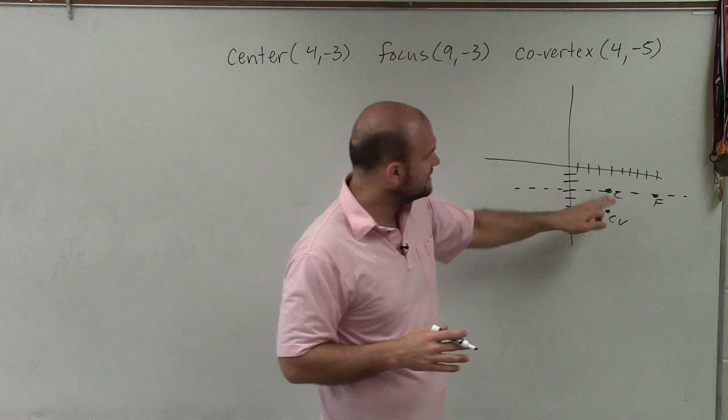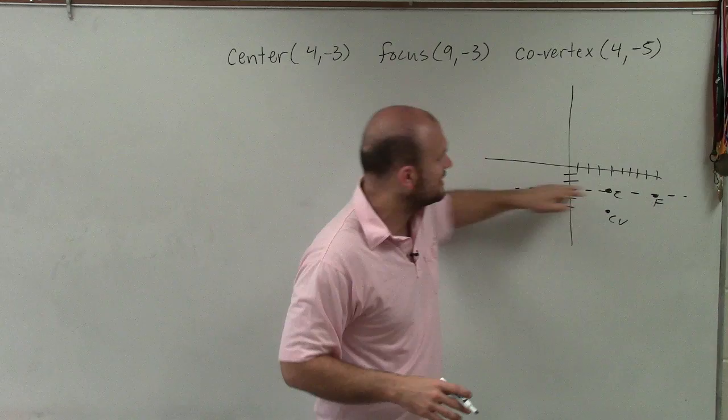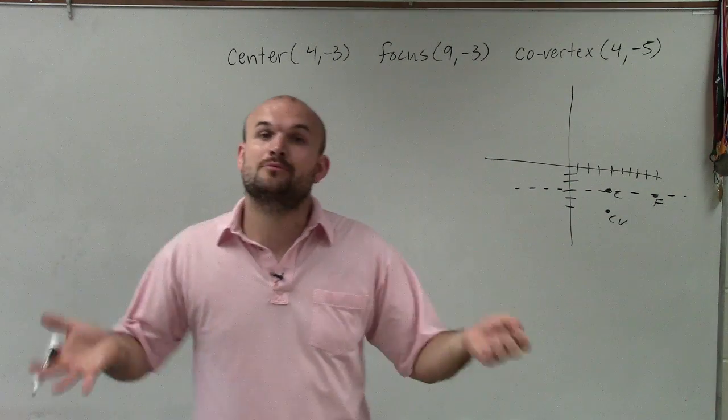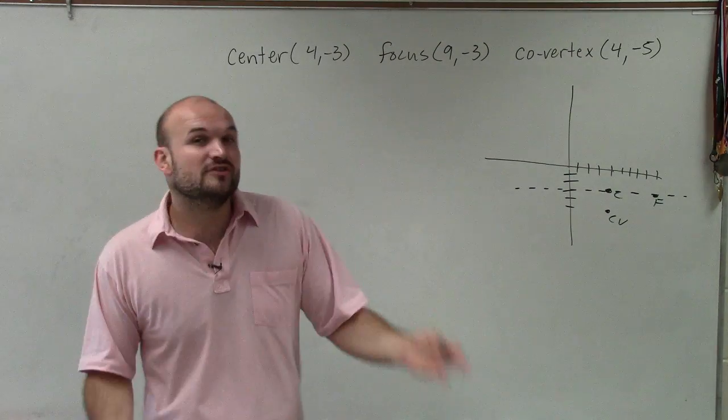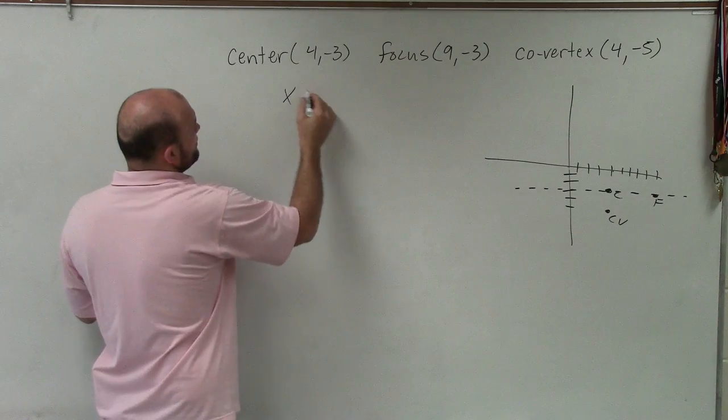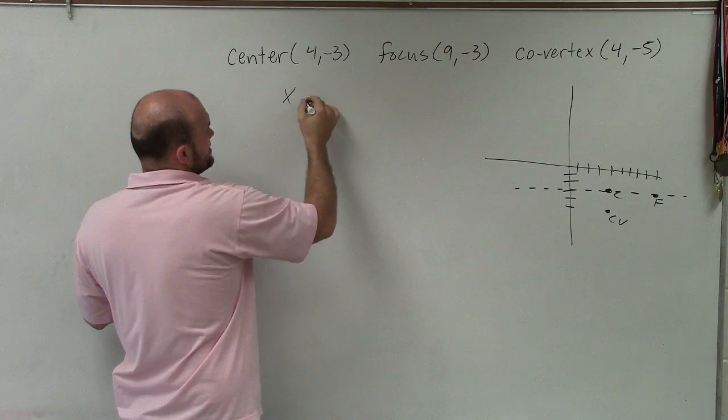And so therefore, we can see that my vertices have to lie on this horizontal line. Therefore, since I know this is a horizontal line, I know my major axis is going to be horizontal. And therefore, my vertices are going to lie on this line as well. So when I know that, I can write the equation for a horizontal major axis of an ellipse.